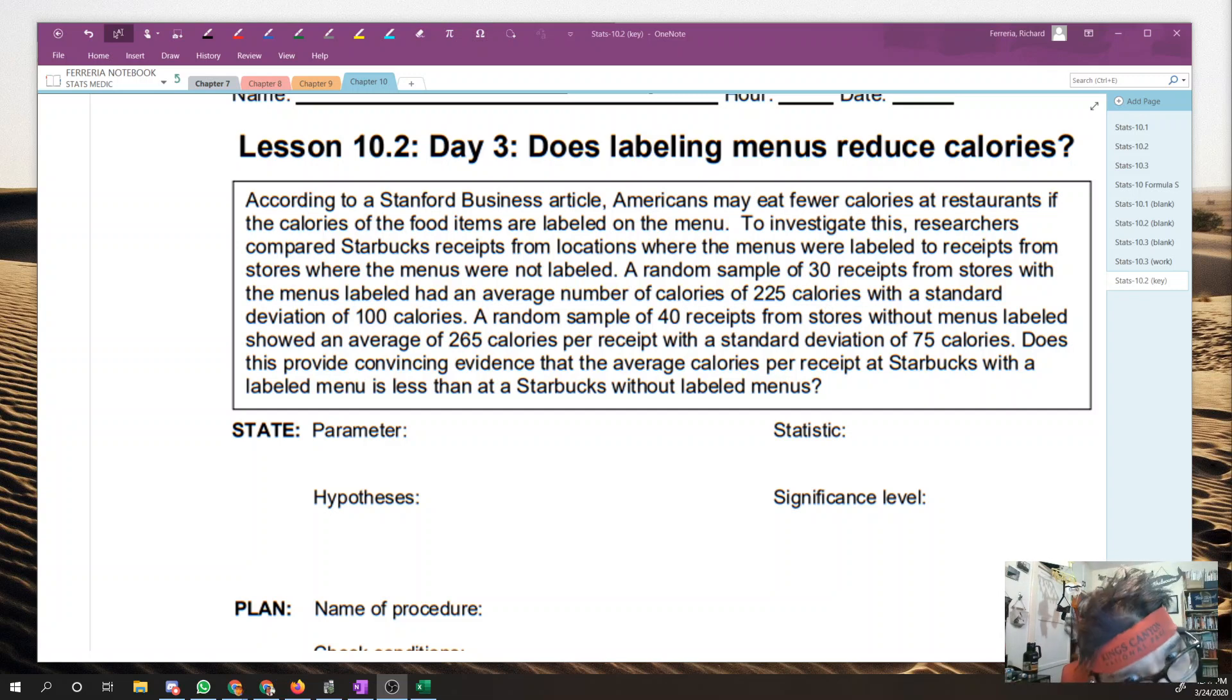So let's go ahead and isolate the numbers that are important. First of all, let's take a look for any means. The first one's 225, the second one is 265. Next, how about we look at standard deviations? There's a standard deviation 100, standard deviation of 75. Last thing, how about sample size? Sample size, that first one is 30. I got excited there because that will allow us to use the CLT. The other sample is 40. So I think we've got everything labeled. We are ready to start this procedure.